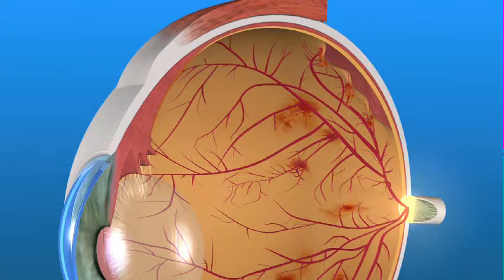Both your central and side vision can be affected by PDR. During your eye exams, your ophthalmologist will likely do a diagnostic procedure called fluorescein angiography. This procedure allows your ophthalmologist to see both normal and abnormal blood vessels.